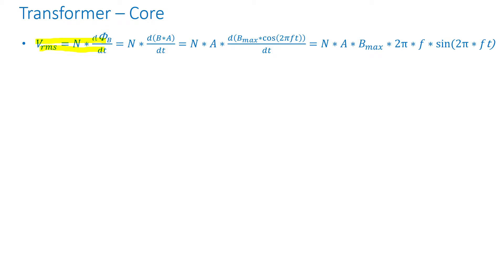From electromagnetics, the induced RMS voltage is equal to the number of turns times the derivative of the flux with respect to time. Since flux is just flux density times the cross-section area, and the area is a constant that does not change with time, we can take it out of the derivative. So it's just number of turns times the cross-section area of the core times the derivative of the flux density.